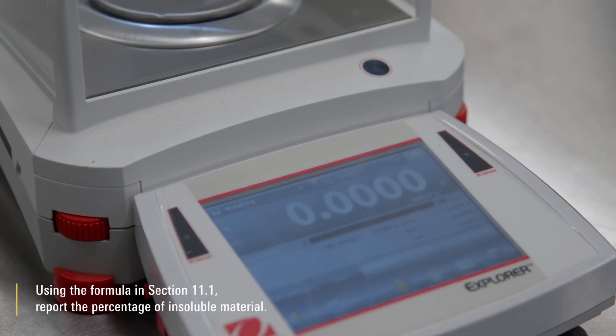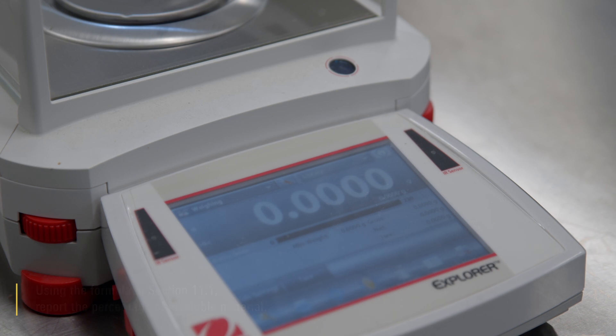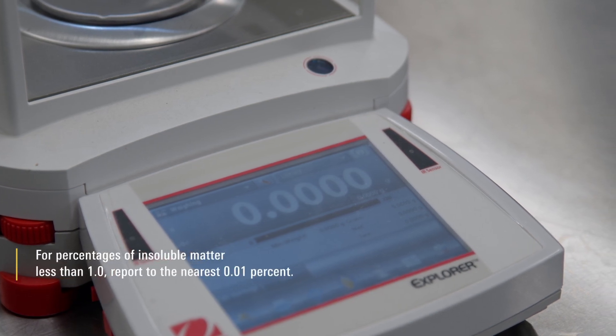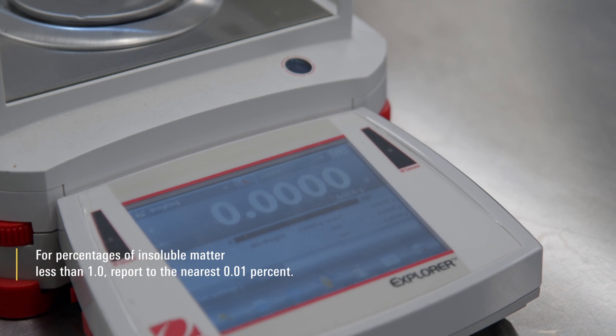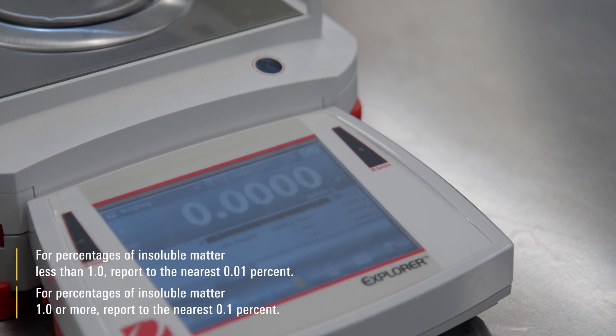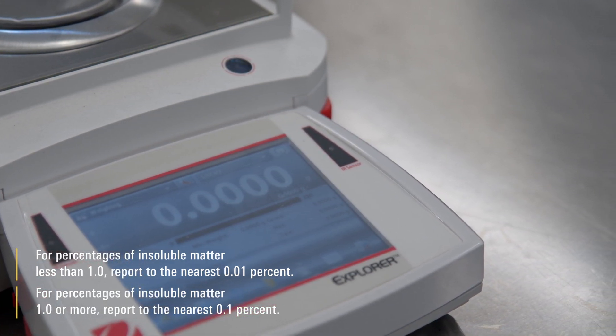Using the formula in section 11.1, report the percentage of insoluble material. For percentages of insoluble matter less than 1.0, report to the nearest 0.01%. For percentages of insoluble matter 1.0 or more, report to the nearest 0.1%.